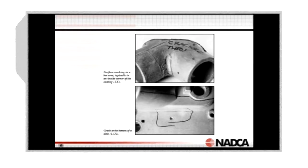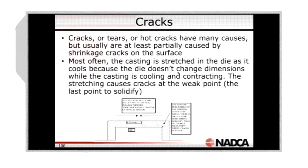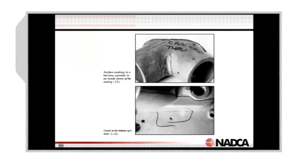Cracks, tears, or hot cracks have many causes, but usually are at least partially caused by shrinkage cracks on the surface. If you imagine that area in the previous slide — this is all frozen, but this part looks frozen but it's not. It's part of this rice grains in honey. As soon as this starts to shrink in both directions, it opens up a crack.